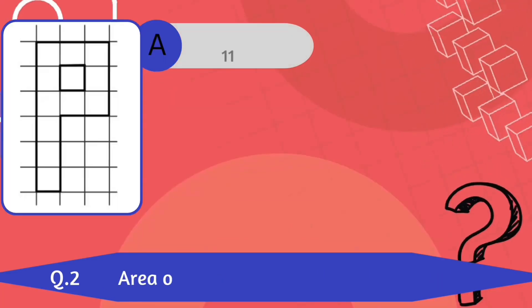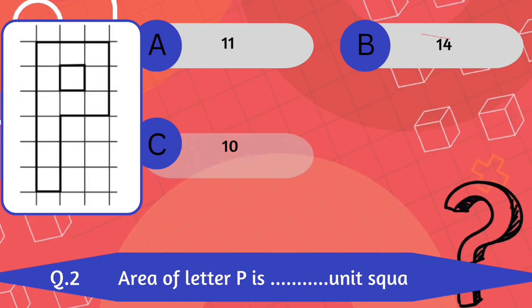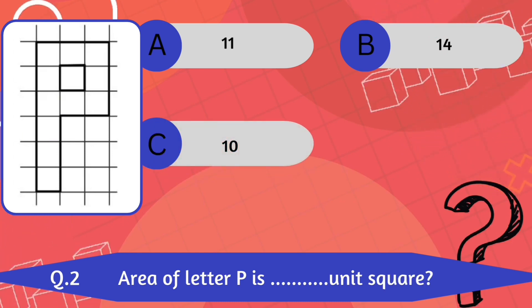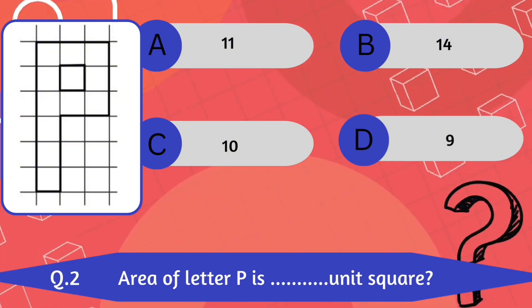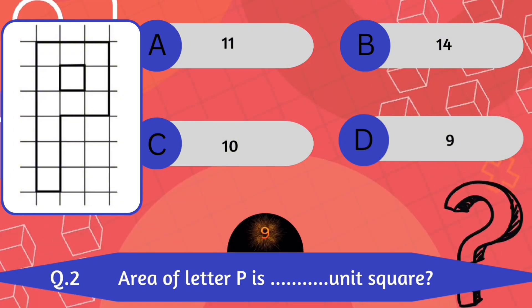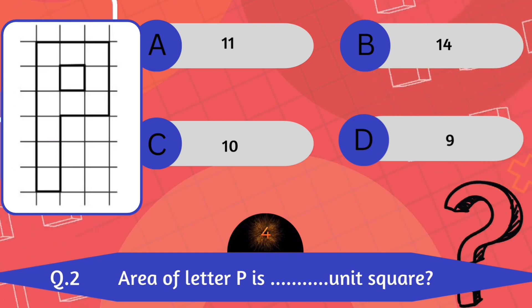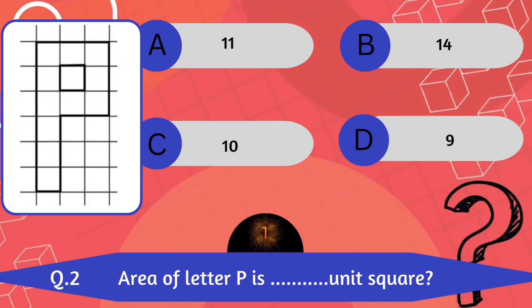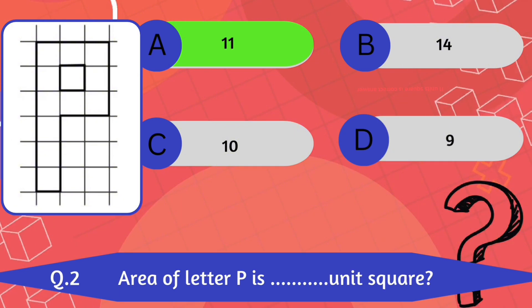Question number 2. Area of letter P is dash unit square? A. 11. B. 14. C. 10. D. 9. 11 unit square is the correct answer.